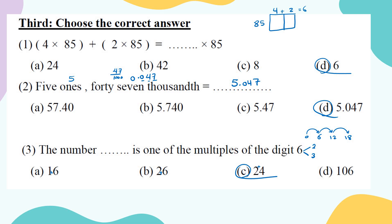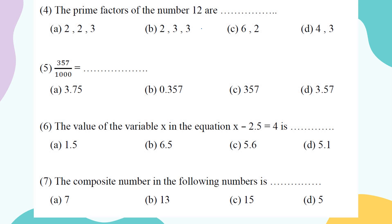What are the prime factors of 12? The correct option must be all prime numbers that multiply to give 12. Two times two times three: 2×2=4, 4×3=12 — correct, and all are prime. Two times three equals 6, 6×3=18 — not 12. Six times two equals 12, but 6 is not prime. Four times three equals 12, but 4 is composite. Answer: 2 times 2 times 3.